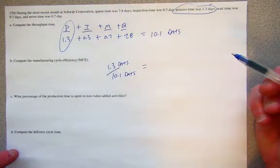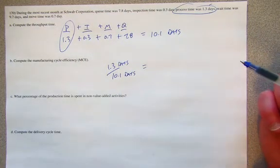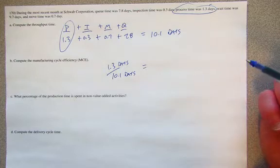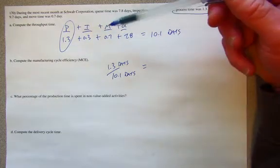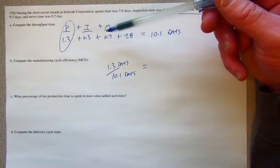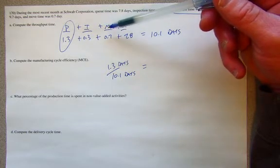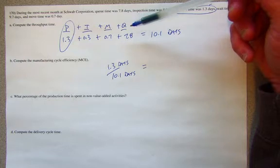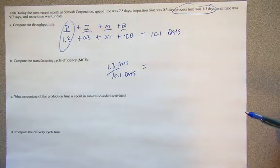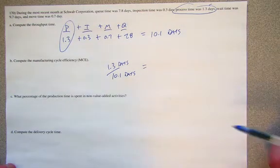Everything else in this formula really doesn't do anything to make the product better. I mean, inspection, you would certainly avoid that if you could. Moving, that's wasted effort and time. Avoid it if you can. The queue time, that's just kind of idle time. So, the only time that really adds any value to the product is the 1.3 days.